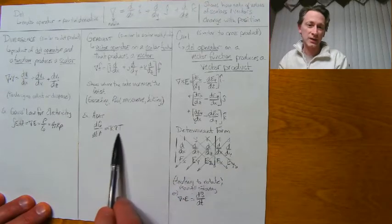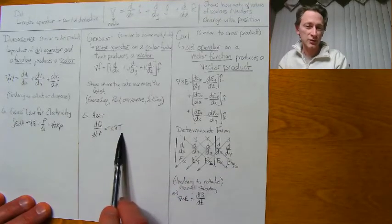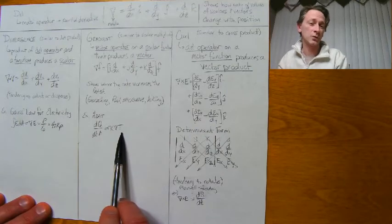An example of this might be heat. The del with respect to temperature will give us the heat flow or the gradient.